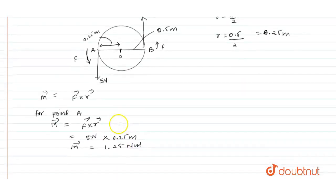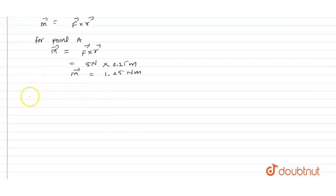Now for point B, the moment of force will be force times perpendicular distance. So force is 5 Newton and the perpendicular distance is 0.25 meter. So it also comes out to be 1.25 Newton meter.